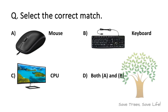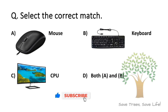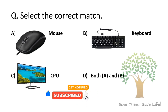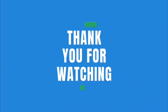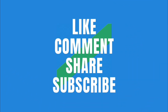Friends, this question is for you — tell me the answer in the comment box. The question is: select the correct match. Option A: Mouse, Option B: Keyboard, Option C: CPU, Option D: Both A and B. Thank you for watching. Please like, comment, share, and subscribe to my channel. Thank you.